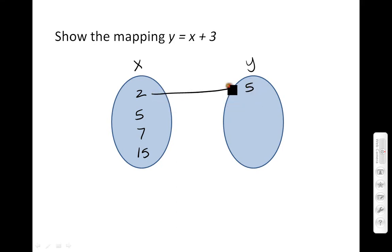When you add 5 and 3 together, you get 8. So I'll put an 8 here. When you add 3 and 7 together, you get 10. And then when you add 3 and 15 together, you get 18.